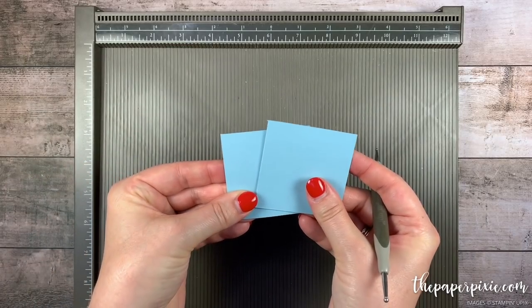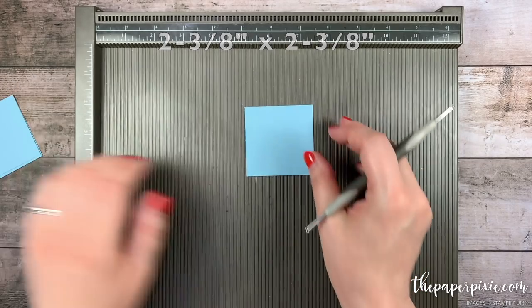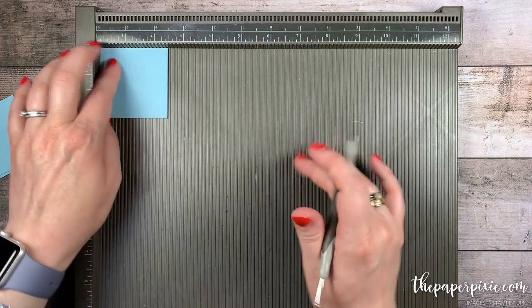Then I have four pieces of Balmy Blue that measure two and three-eighths by two and three-eighths. We're gonna score these on all four sides at three quarters.